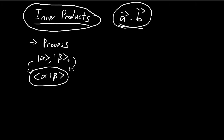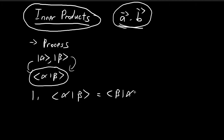We can define this process however we want as long as three rules are satisfied. The first rule is that the inner product must be defined such that the inner product between alpha and beta is equal to the inner product between beta and alpha, conjugated. I'm going to use a star to represent the conjugate.